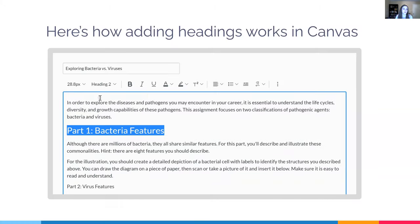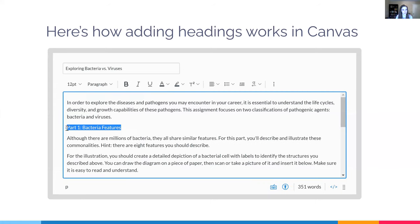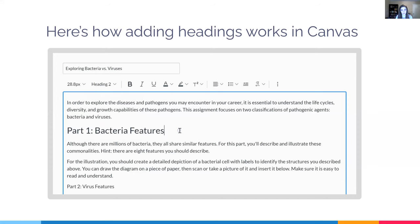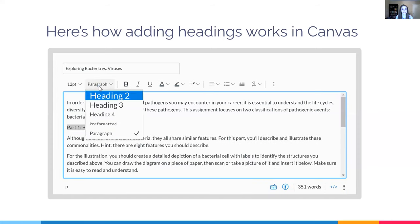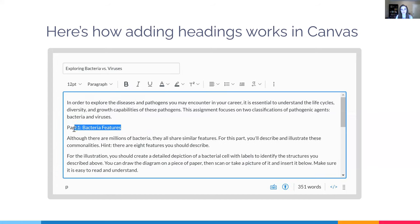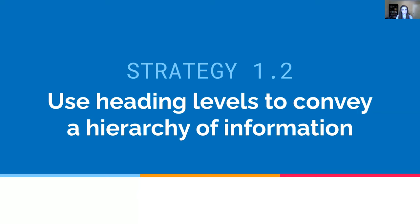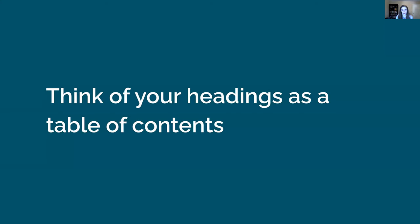Here in Canvas, you select the text and then use the dropdown to select the heading. I chose heading level 2 here because the page title is heading 1, and we add headings in order. When selecting headings, you want to choose the heading level that conveys an accurate hierarchy of information. Think of your headings as a table of contents — for screen reader users, they literally are a table of contents used to navigate the page.